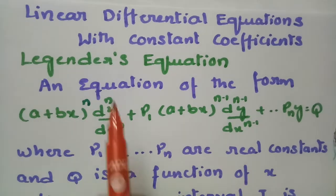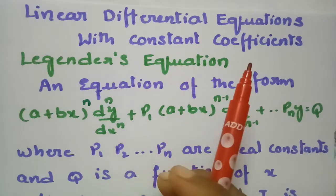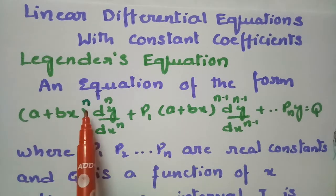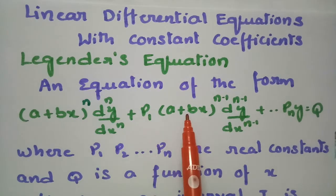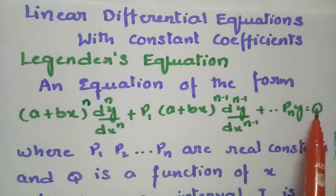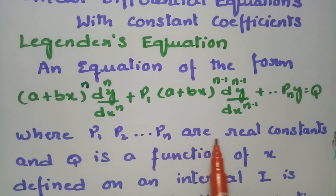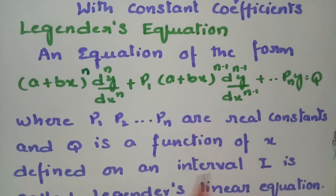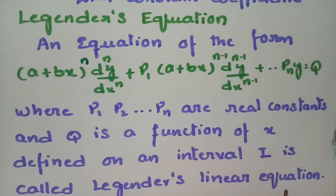Today's video I am going to explain Legendre's Equation. This topic is from Linear Differential Equations with Constant Coefficients. An equation of the form (a + bx)^n · d^n/dx^n + p1·(a + bx)^(n-1)·d^(n-1)/dx^(n-1) + ... + pn of y equals q, where p1, p2, p3, and so on pn are real constants and q is a function of x, defined on an interval I, is called the Legendre's Linear Differential Equation.